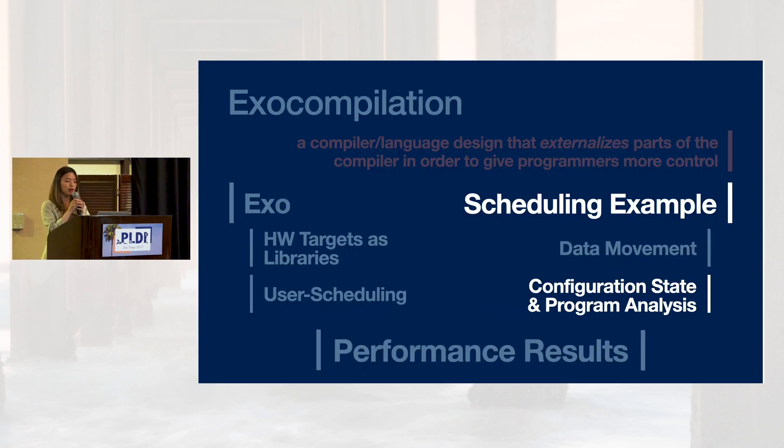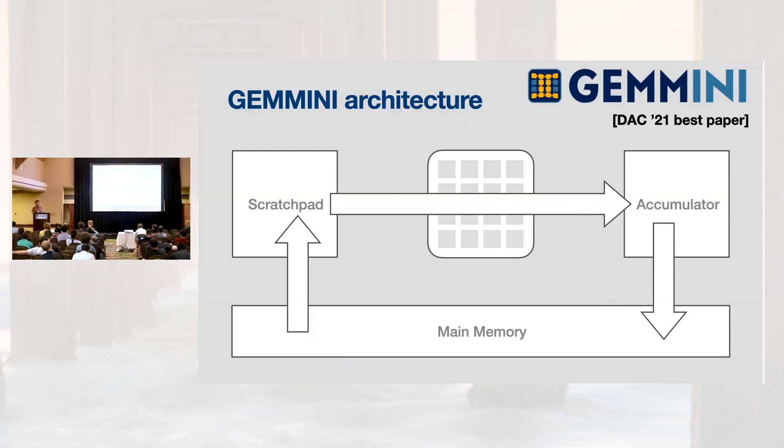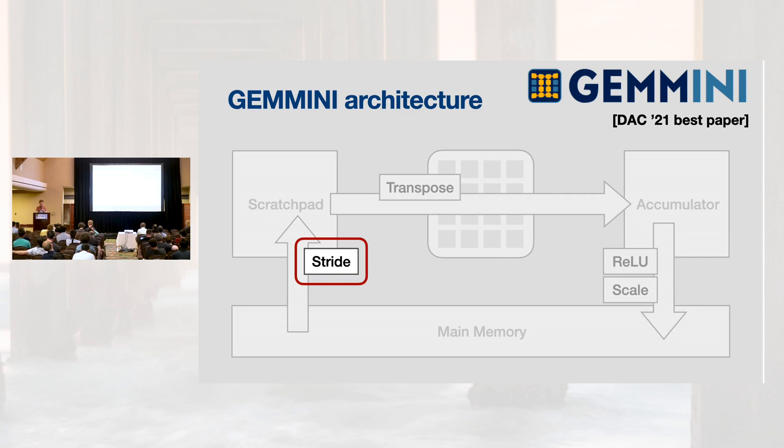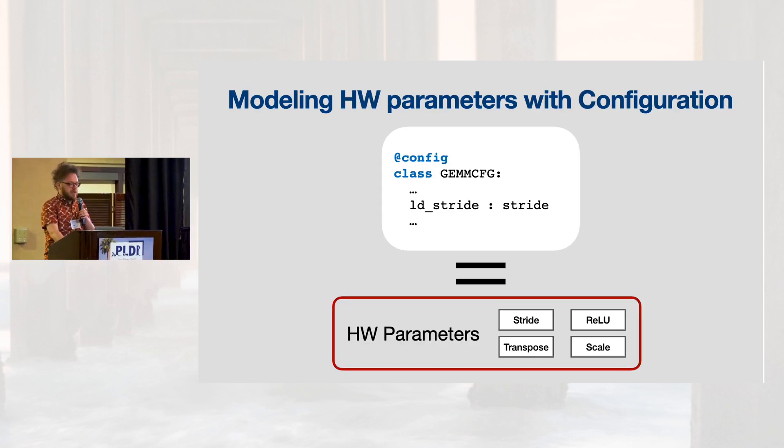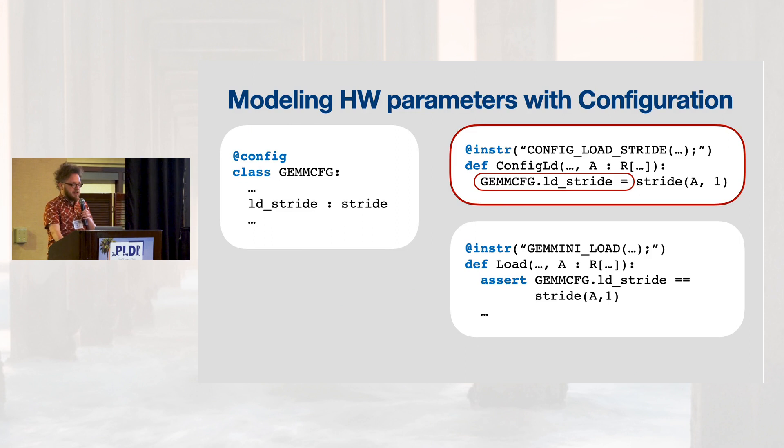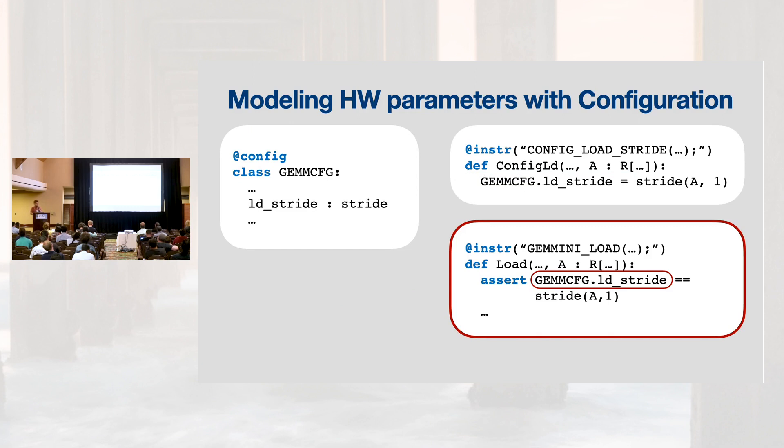Now, I'd like to switch the talk to my co-author Gilbert to talk about the challenges we had from managing ISA level configuration state. Thanks, Yuka. Okay, let's look at the Gemini architecture again. In addition to memories and the systolic array, Gemini has hardware configuration state that changes the behavior of these basic instructions. For example, a stride parameter must be set to control how data is loaded from main memory into the scratch pad. So in EXO, we model this configuration state using global structures tagged with the keyword config. Then we write custom instructions to set this configuration state and then make other instructions depend on the configuration state by reading its value.